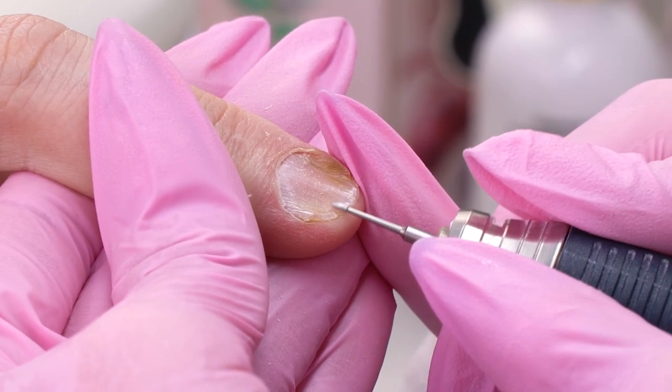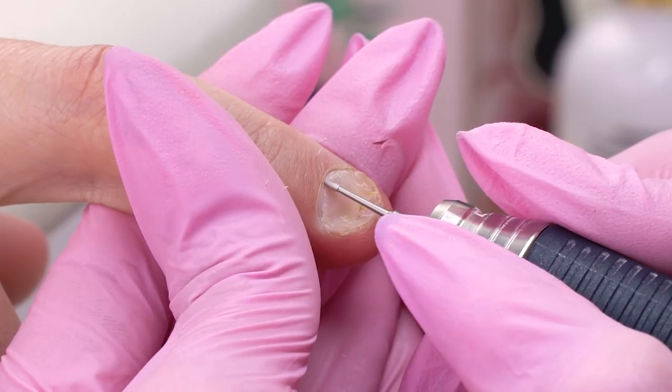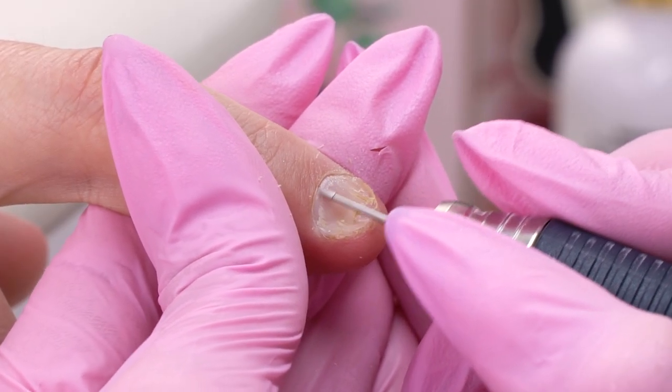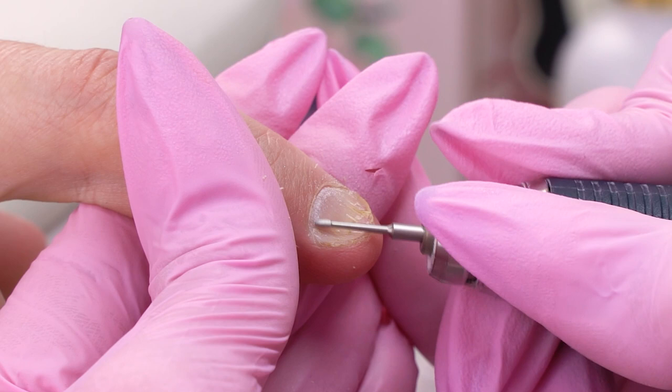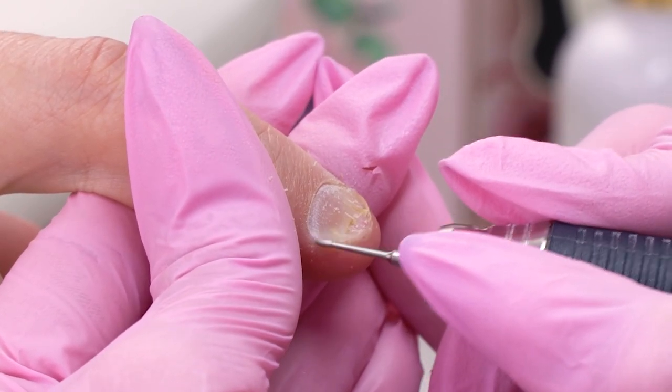To transform these nails as much as I can, I will do a manicure using a safe drill bit so as not to cut the skin. This drill bit lifts up the cuticle well, removes the pterygium and even some of the peeled-off parts.